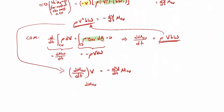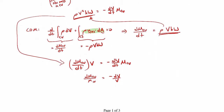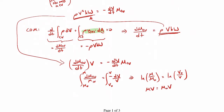Bringing the mass and control volume terms to one side, we rearrange to get dm_cv over m_cv equals minus dv over v. Integrating both sides from initial mass m₀ and initial velocity v₀ to final mass m and velocity v gives: ln(m/m₀) on one side and ln(v₀/v) on the other. Taking exponentials of both sides and rearranging gives our result.